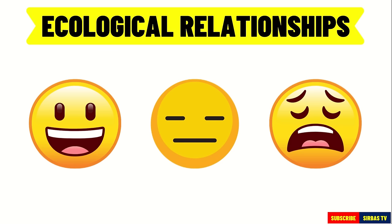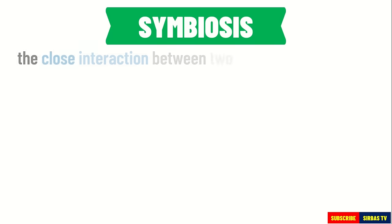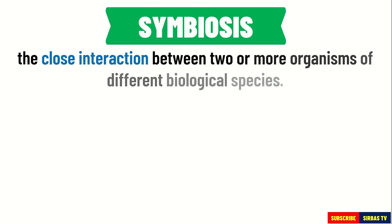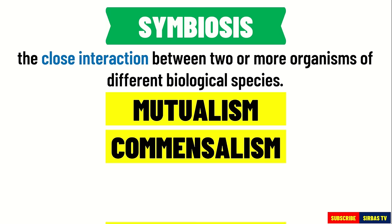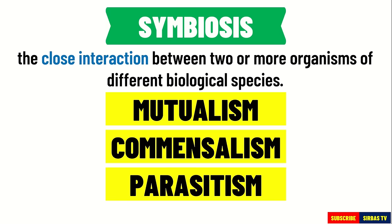One of the interactions that occur in our ecosystem is symbiosis. It is the close interaction between two or more organisms of different biological species. There are three types of symbiotic relationships: mutualism, commensalism, and parasitism.